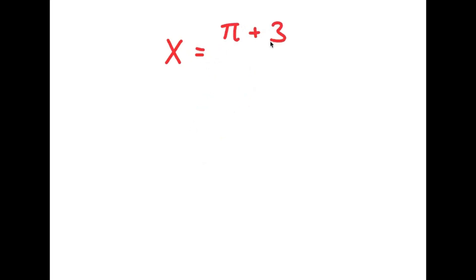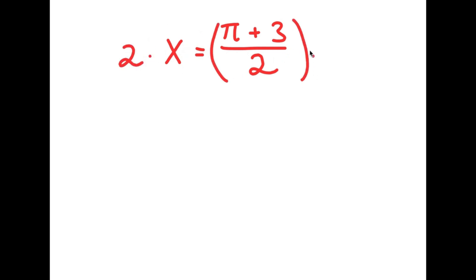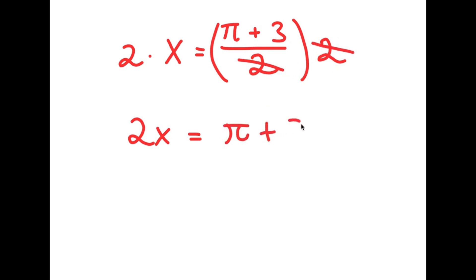What I'm first going to do is start with the statement x is equal to pi plus 3, over 2. All I'm doing is giving a value to a variable, which is completely legal. Now I'm going to multiply both sides by 2. So I get 2 times x is equal to (pi plus 3 over 2) times 2. These two twos cancel out, so I get 2x is equal to pi plus 3.